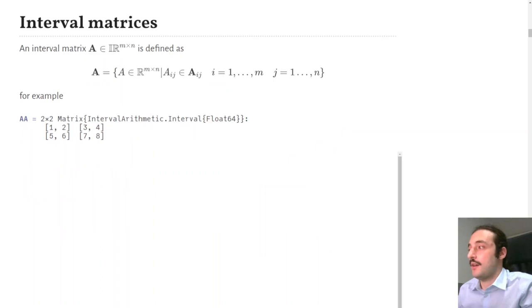The starting point for Interval Linear Algebra is the concept of interval matrix, which in simple words is a matrix containing intervals. Another way to think about it is that an interval matrix is a set of real matrices so that each element in the real matrix belongs to the corresponding interval in the interval matrix.